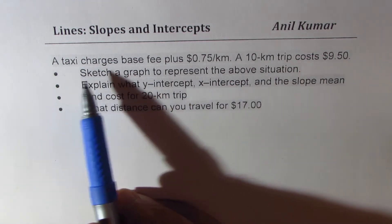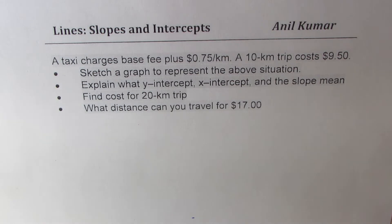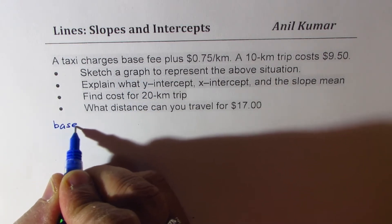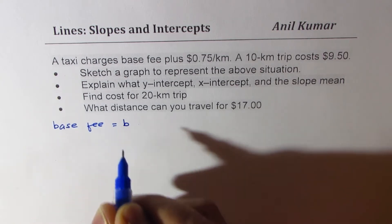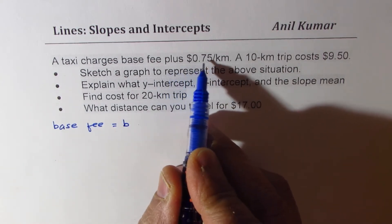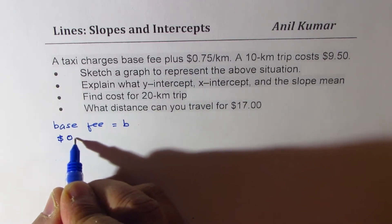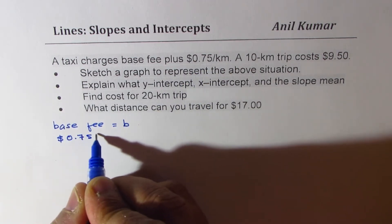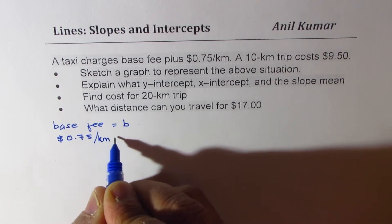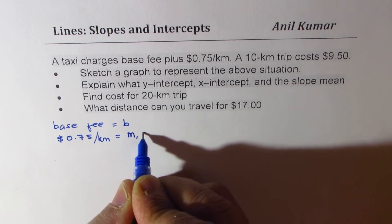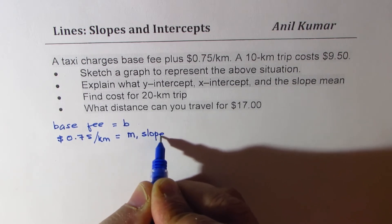We are given a taxi charges base fee, so let the base fee equal B plus $0.75 per kilometer. So we are given a rate of $0.75 per kilometer. Now, rate corresponds to slope M. So that is M, the slope, in our equation.